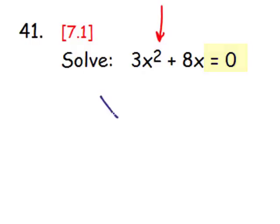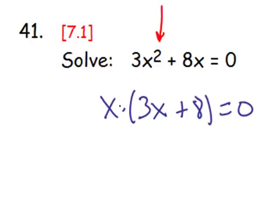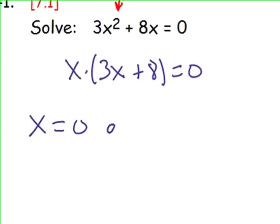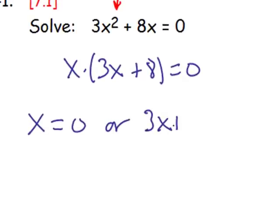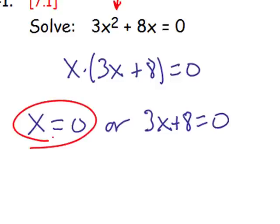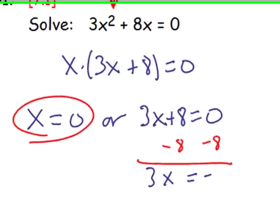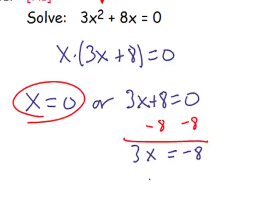What we're going to do is factor out x, and we're left with 3x plus 8 is equal to 0. Now these two factors separately will each be set equal to 0: x could equal 0, or 3x plus 8 equals 0. For the second one, we'll add negative 8 to each side, getting 3x equals negative 8, then divide each side by 3, so x equals negative 8 thirds.